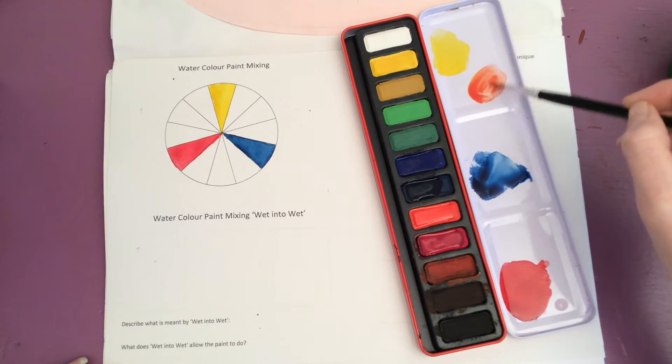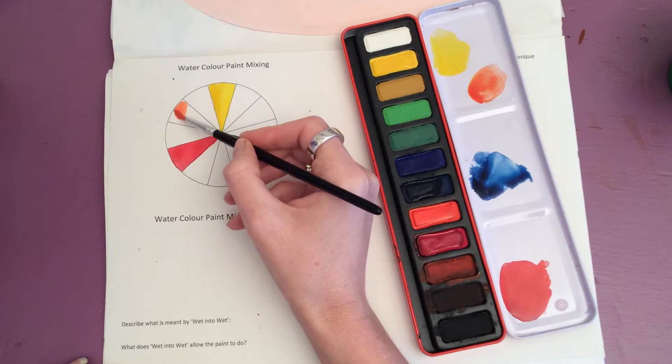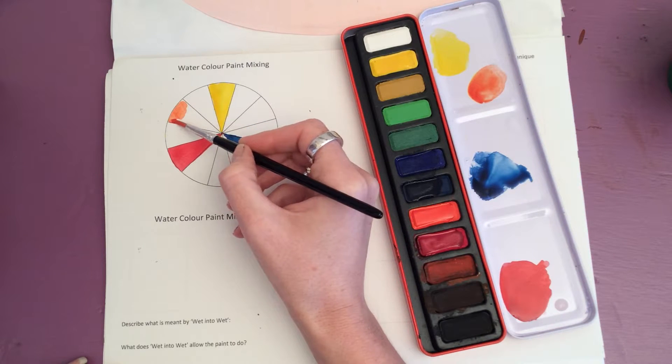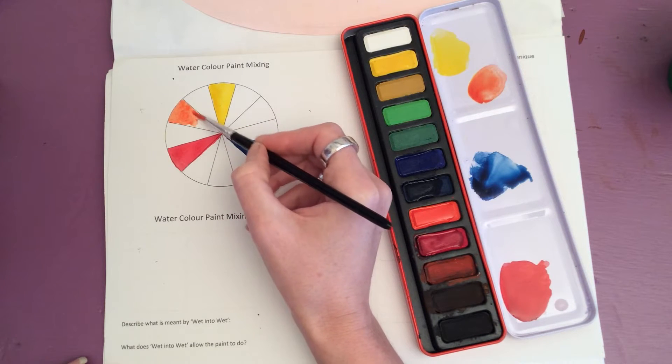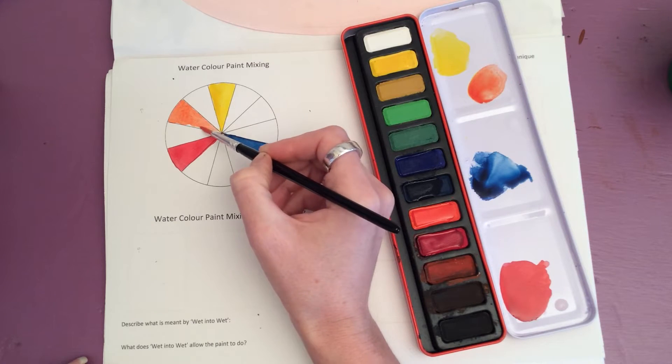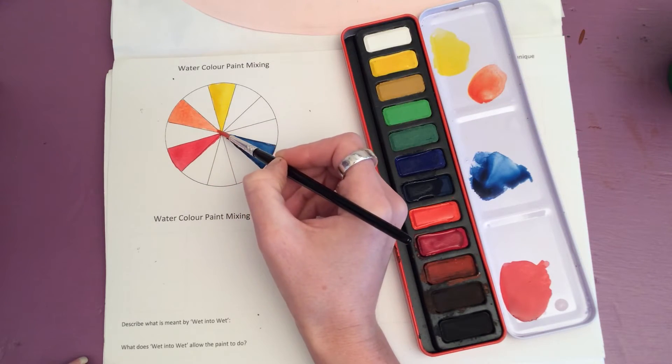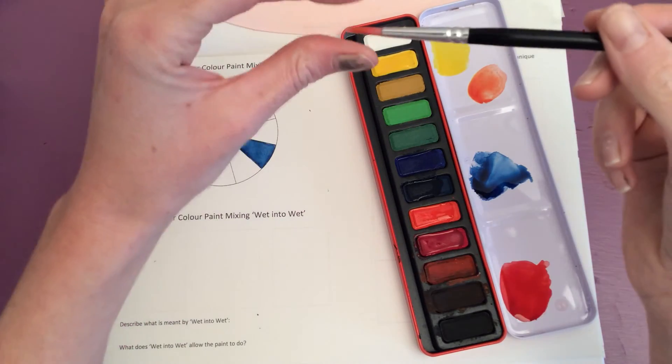So you might find now it's a little bit paler when you apply it. That's okay, watercolors aren't meant to be used like poster paint, so they should come through quite pale. I suppose if you want to make your color stronger, you can add less water to it or squeeze out the water from your brush when you've washed it.